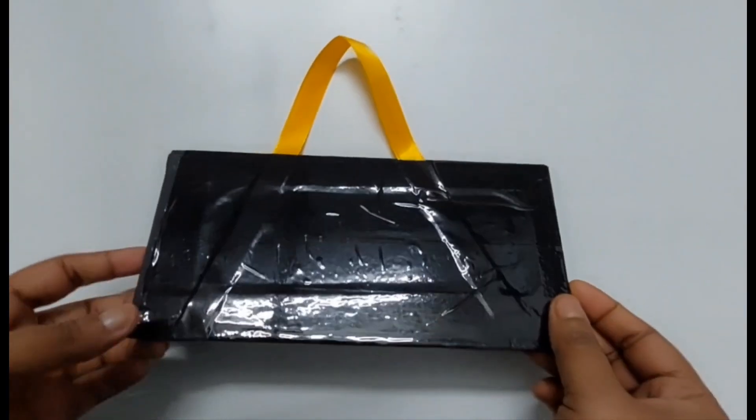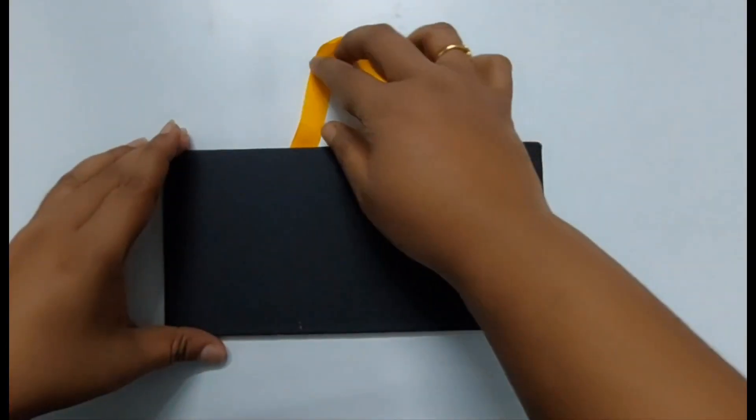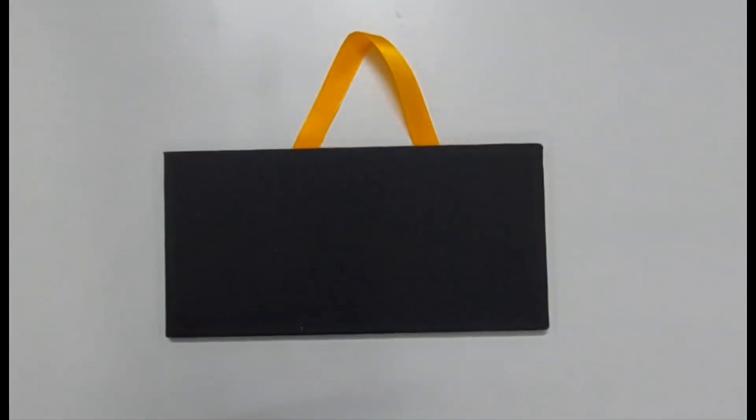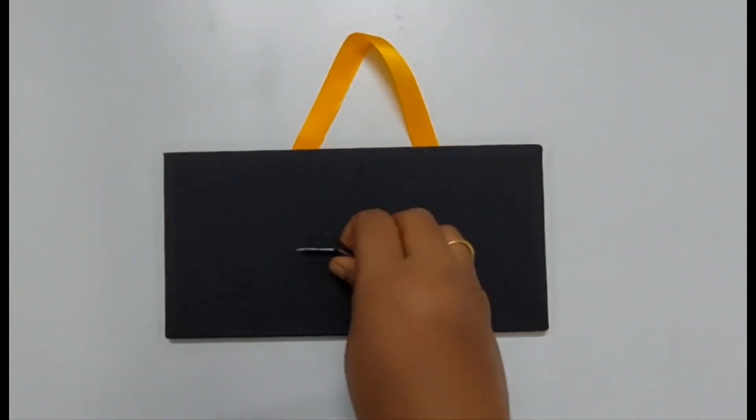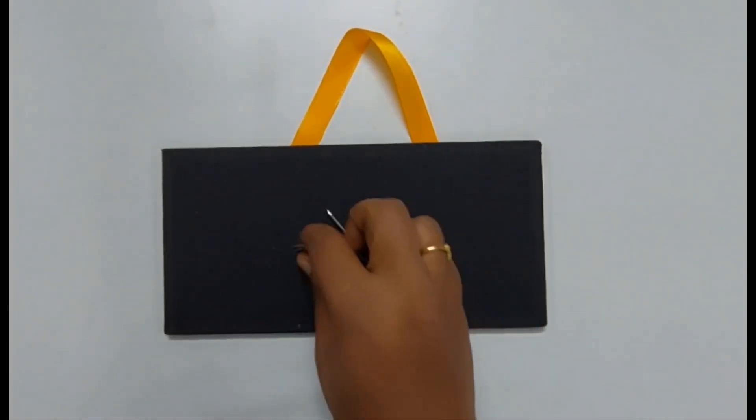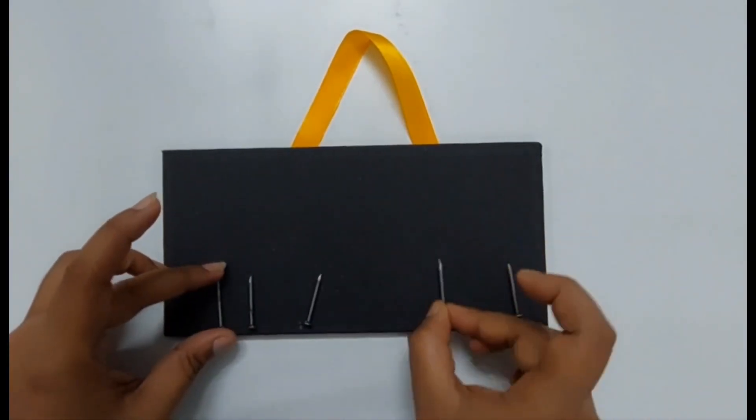As you can see, I have put the cello tape all over the canvas board. Now what I am going to do is put the nails by using a hammer. I will put these five nails here.